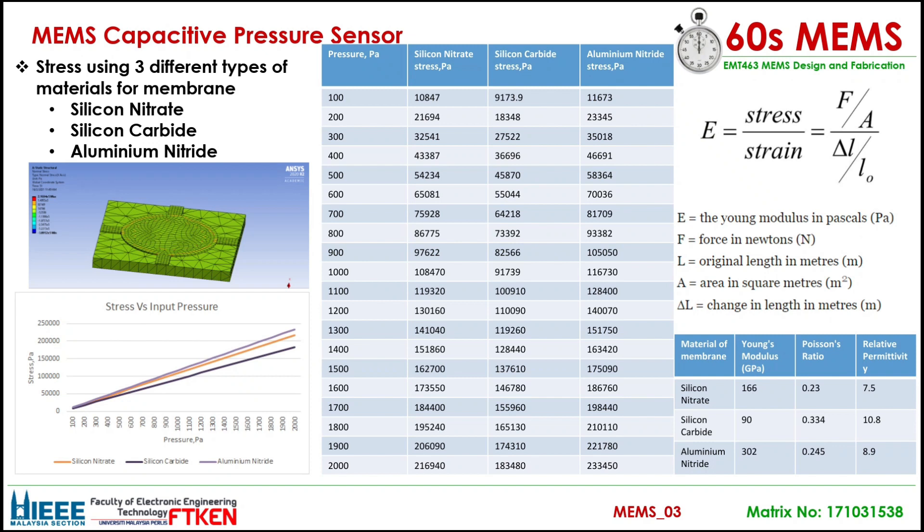In this presentation, the stress is determined by using three types of materials for the membrane, which are silicon nitrate, silicon carbide, and aluminum nitride. The figure shows the simulation of the normal stress. From the graph, aluminum nitride has the higher stress value while silicon carbide has the lowest stress.